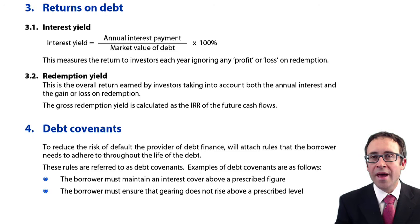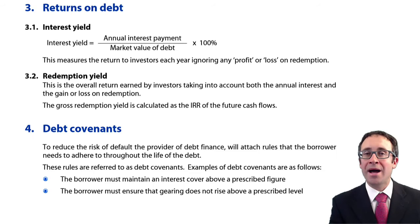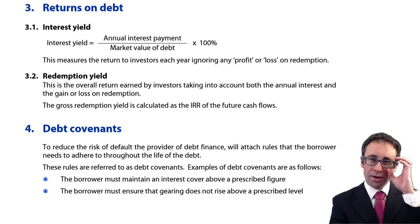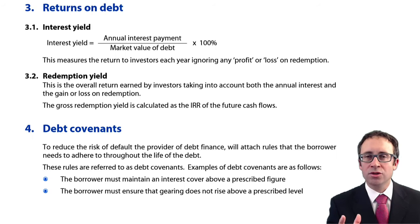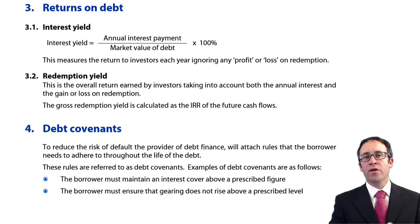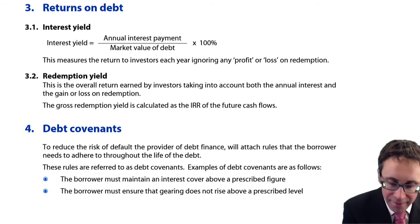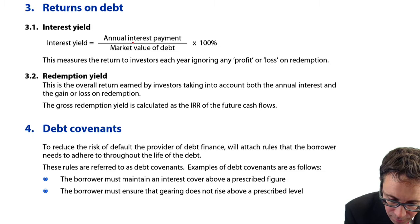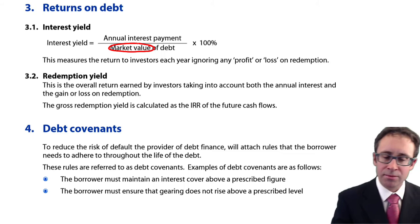So let's look at the returns on debt first. The return is looking at the amount of money that you get back from the investor's perspective. There are two things we can look at. First of all, the interest yield, which is nice and straightforward — we just look at the annual interest payment divided by the market value of the debt. That brings about an inverse relationship.